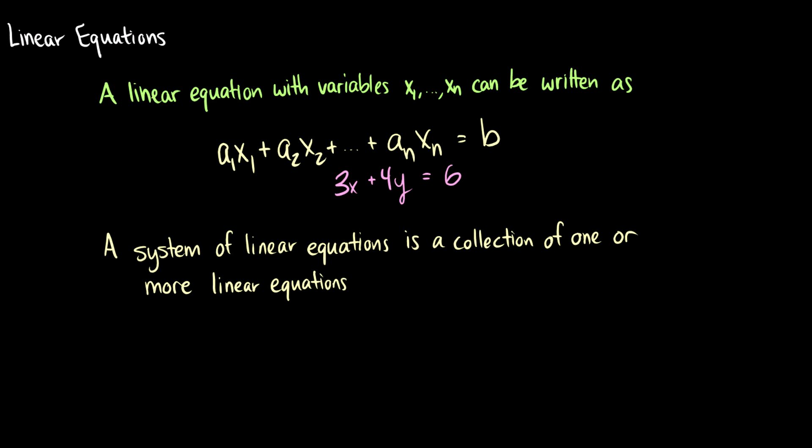So what is a system of linear equations? Well, it's just one or more linear equations. So for instance, you might have x1 plus x2 is equal to 5, and then we have 3x1 plus x2 is equal to 7. And with this information, we can find solutions for x1 and x2.